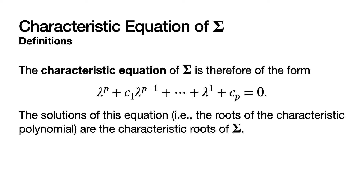With that, the characteristic equation of CAP-SIG is the characteristic polynomial set equal to zero: lambda to the P plus C1 times lambda to the P minus one, plus and so on out to lambda to the first power plus C sub P, all equal to zero. The solutions of this equation — the roots of the characteristic polynomial — are the characteristic roots of CAP-SIG.